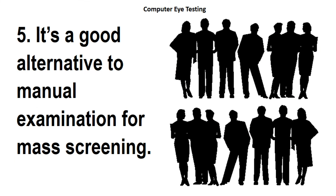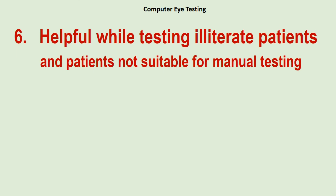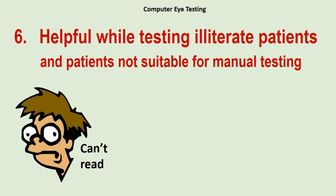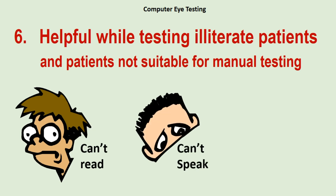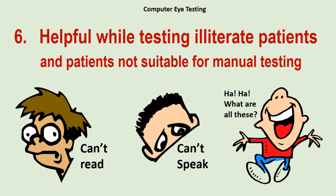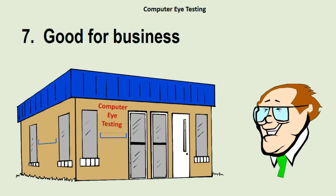Number five: it's a good alternative to manual examination for mass screening. For example, at an eye examination camp with a large number of individuals, it is not possible to check every eye with the manual method. The auto refractor has a definite role to play by doing quick checkups. Number six: if the patient is illiterate, cannot read vision charts, or is a child who cannot understand test charts, a rough idea of the refractive status can still be obtained.